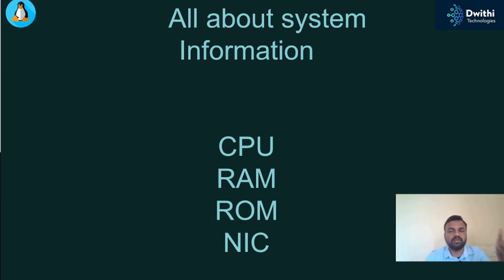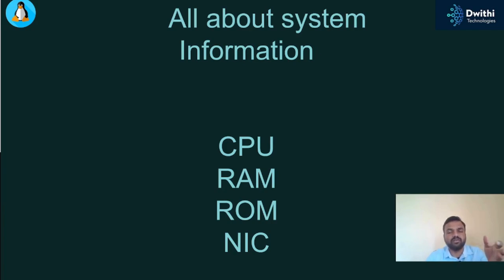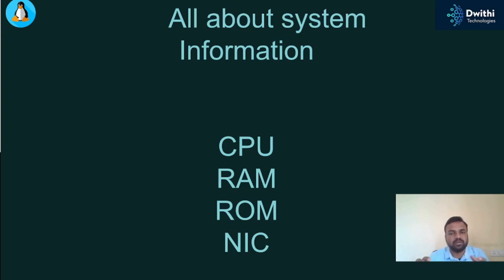CPU is the central processing unit. Whenever you try to perform any particular task — whether it could be opening Paint, Notepad, or any XYZ task — all those things are performed with the help of your CPU. CPU is the responsible component among all your hardware which tries to do that particular task for you. ALU, the arithmetic logic unit, will also be there in the background, but CPU is the primary responsible component.